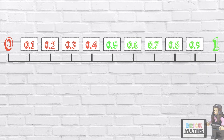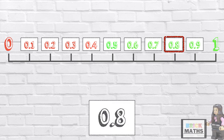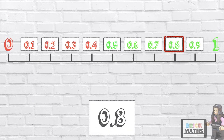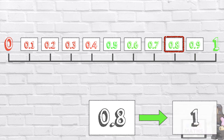So let's have a look at a decimal number. Here we have 0.8. It sits between 0 and 1. Because it ends in 8, we round the number up to the next whole number, which is 1.